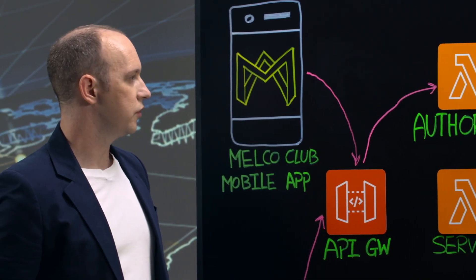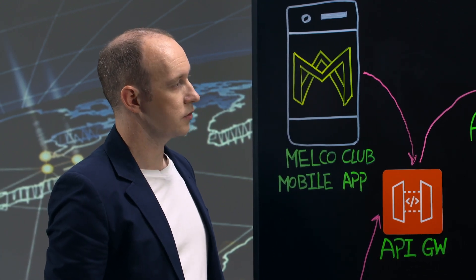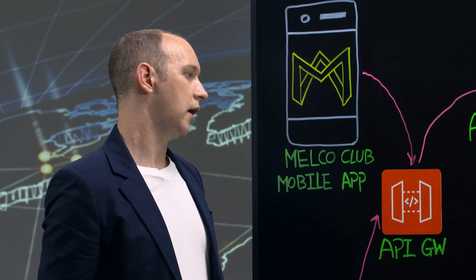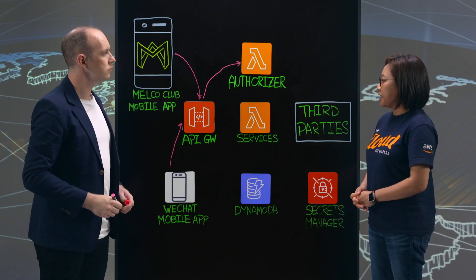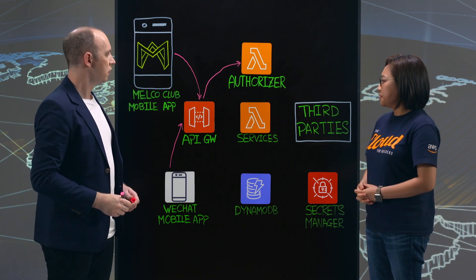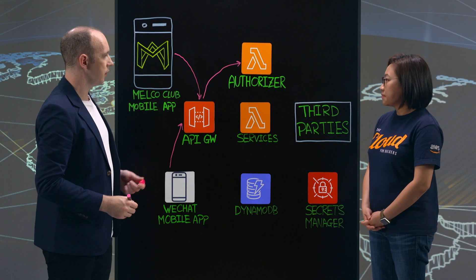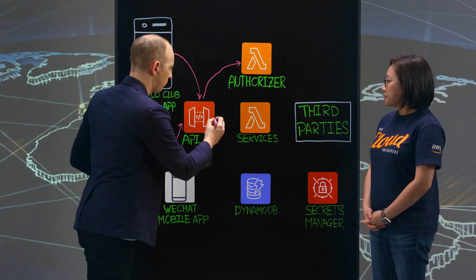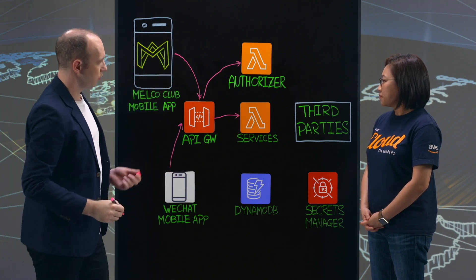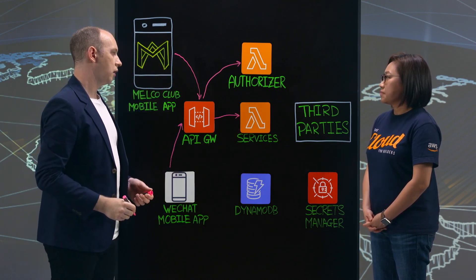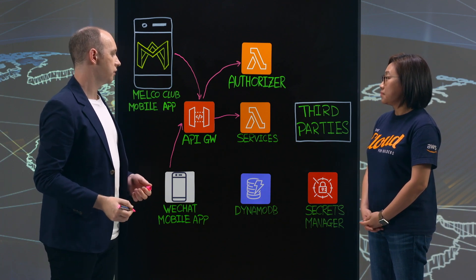Once the service is invoked, the token is decoded and checked or validated against our other systems. So after the user request is authorized, where does the request go? Once the request has been authorized, it will continue to the relevant Lambda service. One of these services could be hotel reservations, dining reservations or payments.